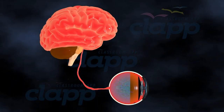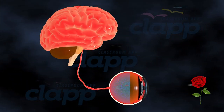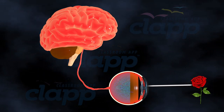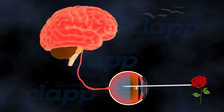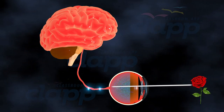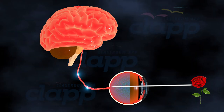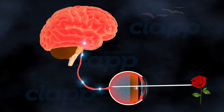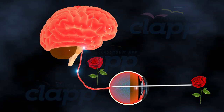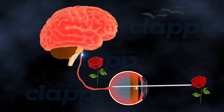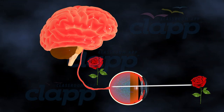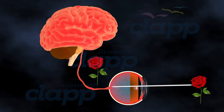Optic nerve and brain connection. Once the photoreceptors capture light, the information is sent as electrical signals through the optic nerve to the brain for processing. It's here that the images we see are interpreted, allowing us to perceive the beauty of the world.